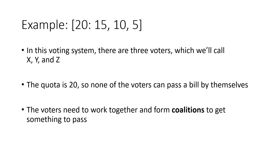In this example, we have a quota of 20, so you need 20 votes to pass. I'm going to call these voters X, Y, and Z — typically we use letters to stand for the voters to make them easier to refer to. So we've got three voters: X's vote is worth 15 points, Y's vote is worth 10 points, and Z's vote is worth five points.